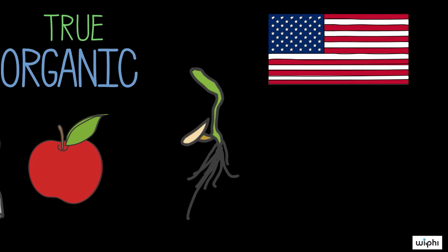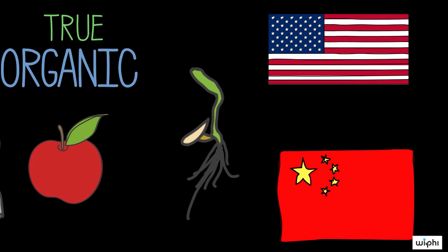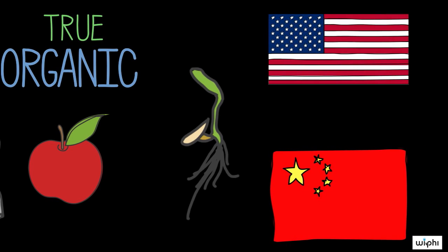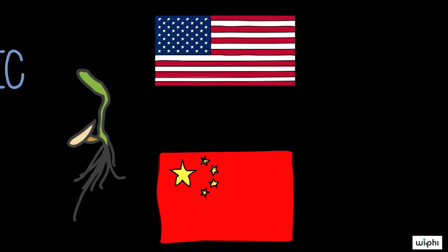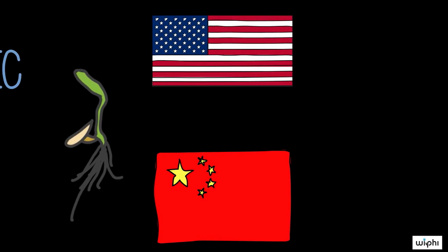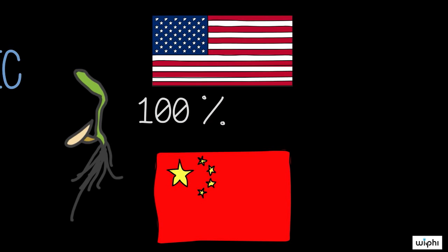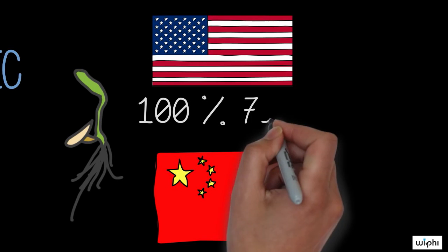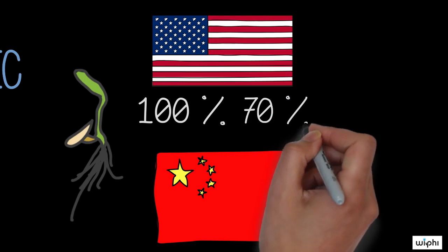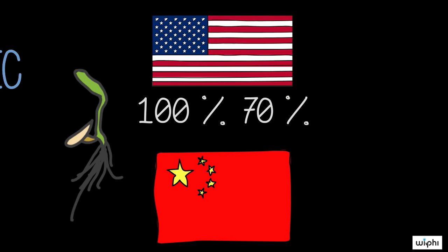different countries have different standards for what counts as organic. Different foods also adhere to different standards. And in the United States, there are various categories for labeling organic products, ranging from a product made with 100% organic ingredients to a product made with at least 70% organic ingredients.